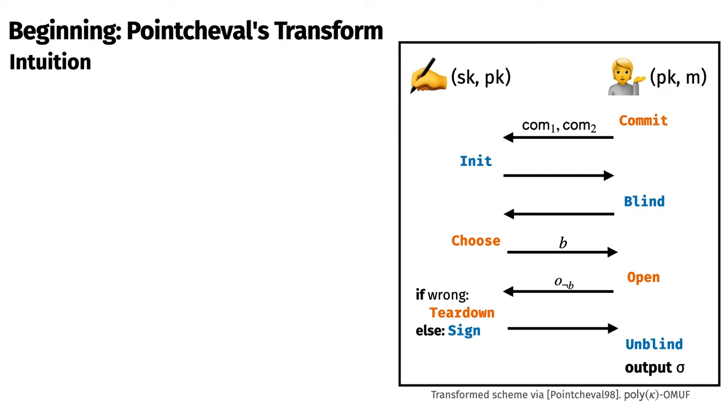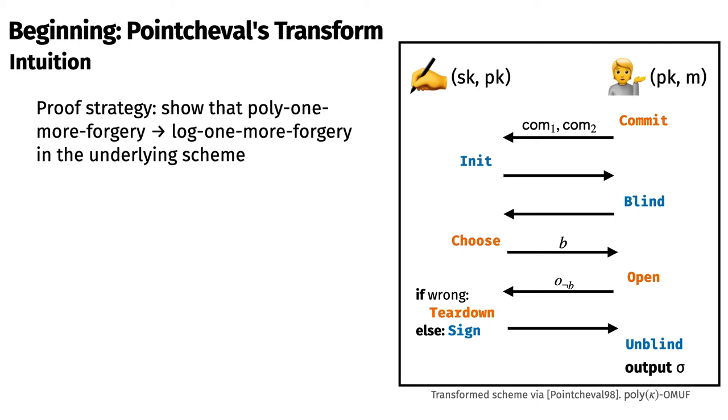What does this transform set out to do? Poincheval's proof strategy is to reduce the security of the underlying scheme, which, recall, can only handle logarithmically many signatures, to that of the transformed scheme. Since the transformed scheme is supposed to support far more signatures than the underlying scheme, there needs to be some way to bring down the number of interactions an adversary can initiate with the underlying signer. To do this, Poincheval defines a simulator which can simulate the signer in the new scheme as long as the commitment to the randomness was honestly computed. So, as long as the user is honest, the underlying signer doesn't need to be called.